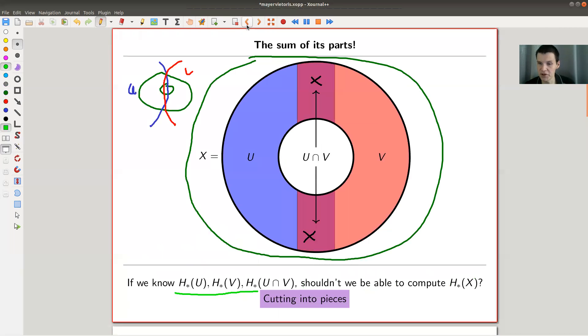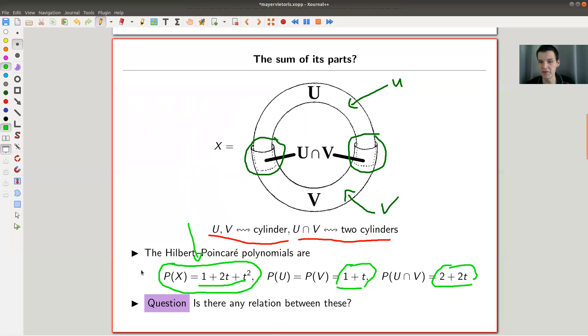And of course, the motivation here is I've cut my space into pieces, and I kind of know all the pieces. So what can I say about this one here? This one is the one we want to know. Of course, I already know it. Ignore that I already know it. I use it here just as an example. So then my guess would be that we should be able to recover this polynomial from the other two polynomials in one way or the other. And this is really where Meyer and Vietoris come in.